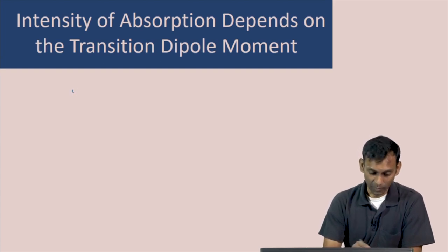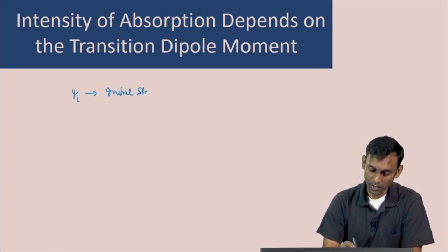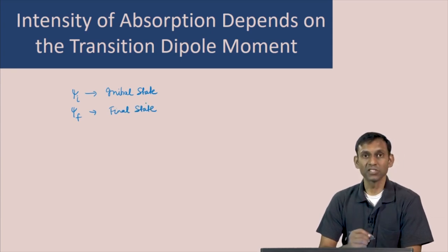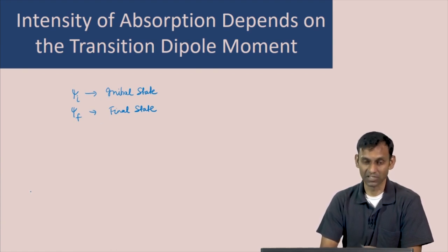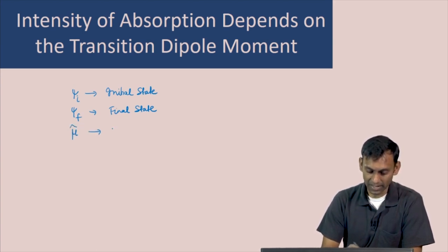Assume that the molecule is in a state psi_i — this is the initial state of the molecule. And let us say phi_f is the final state of the molecule. The transition dipole moment is defined in terms of these initial and final states and one more quantity, which is the dipole moment operator. Let us look at what this dipole moment operator is.